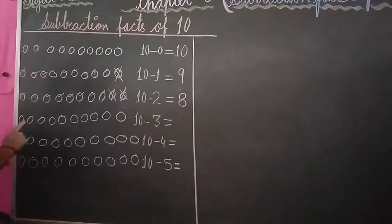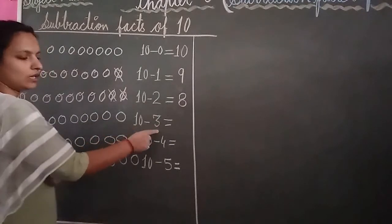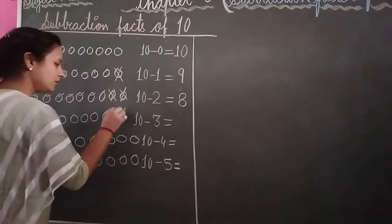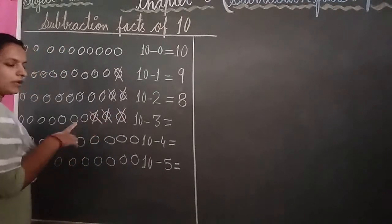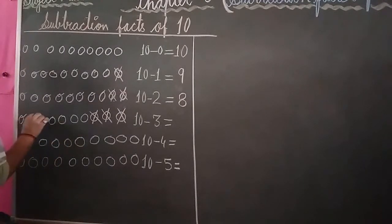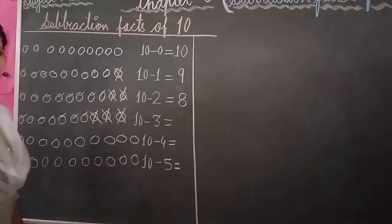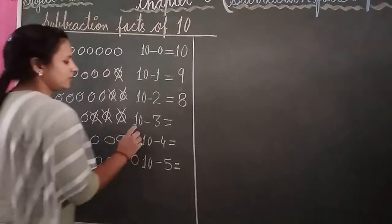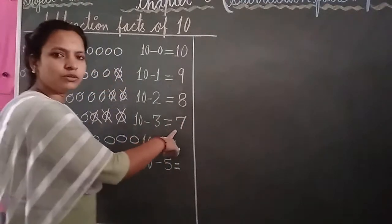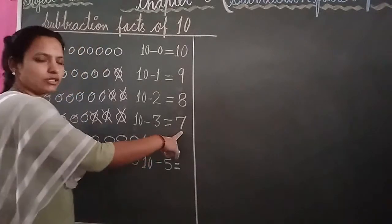Again draw your 10 balls. Write: 10 minus 3. Cut and cross out 3 balls: 1, 2, 3. Count the balls left: 1, 2, 3, 4, 5, 6, 7. How many balls are left? 7. The answer is 7. 10 minus 3 equal to 7. Is that clear?